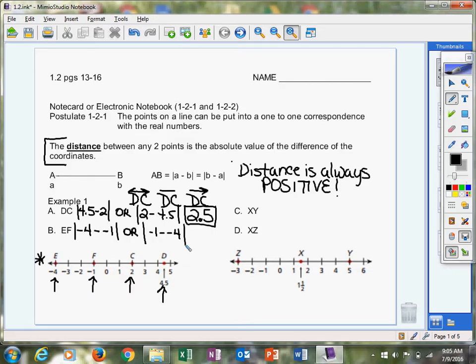All right? So negative 4 minus a negative 1, that's the same thing as negative 4 plus 1, or negative 1 minus a negative 4 is the same thing as negative 1 plus 4. So regardless, when you take the absolute value of your answer, you should get 3. The distance between those are 3.